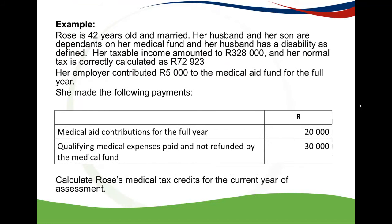Let's do an example. Rose is 42 years old and married, so she's younger than 65. Her husband and her son are dependent on a medical aid fund and her husband has a disability as defined. In other words, she would qualify for this rebate and not the first rebate we covered in Part 1.